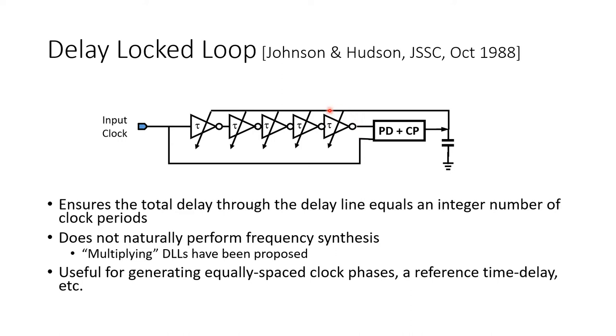You can make use of that control voltage or current in copies of these buffer circuits and delay other signals elsewhere in your system by the exact same amount labeled here tau. This can be really useful because you have no equivalent to a band gap reference for time in an integrated circuit.